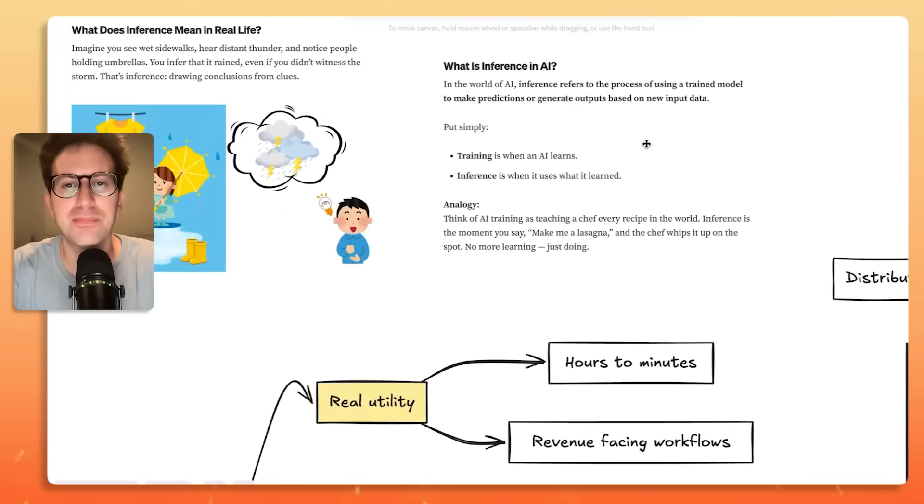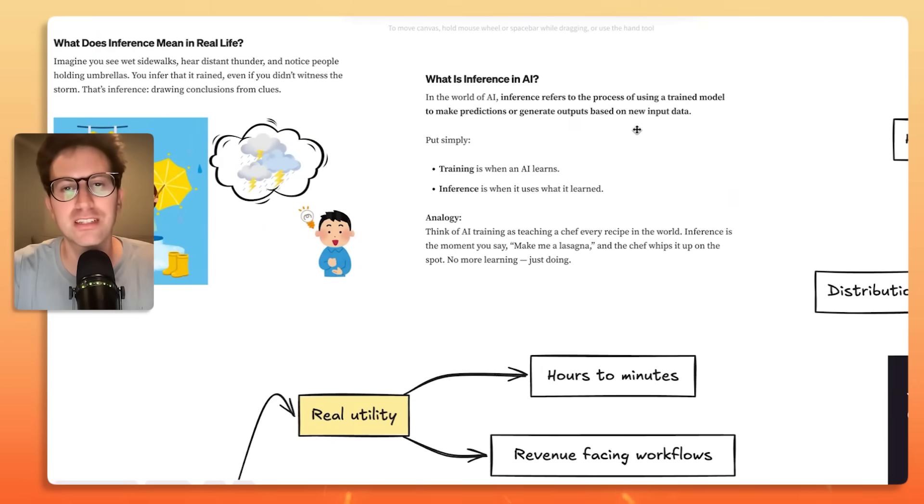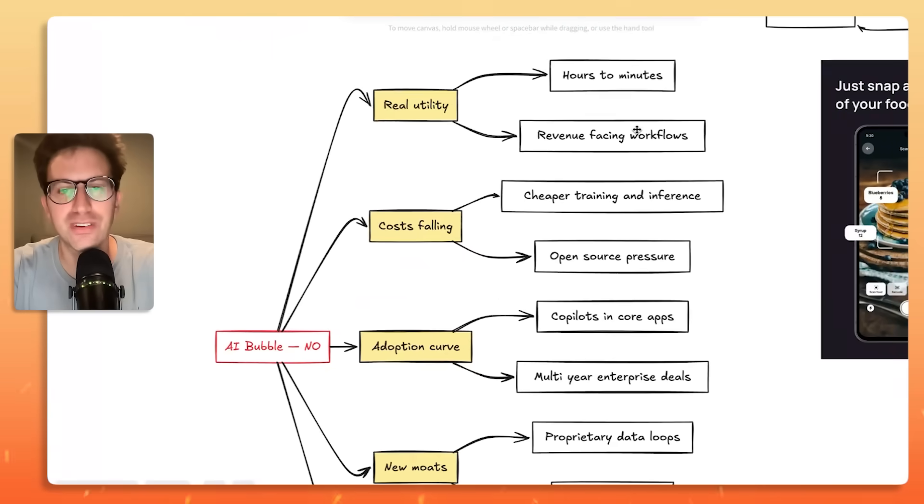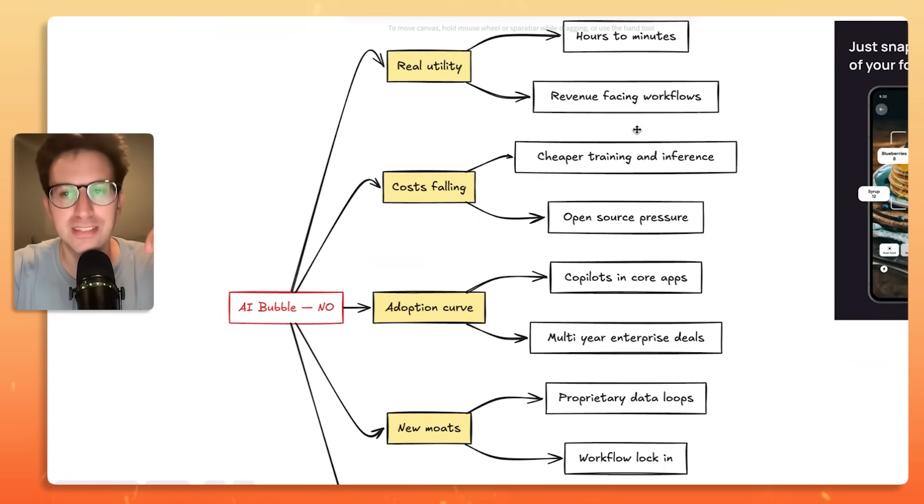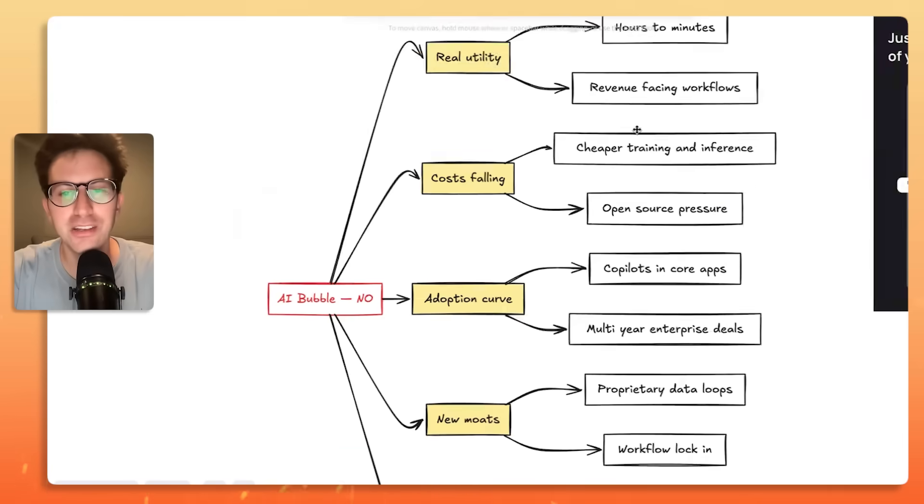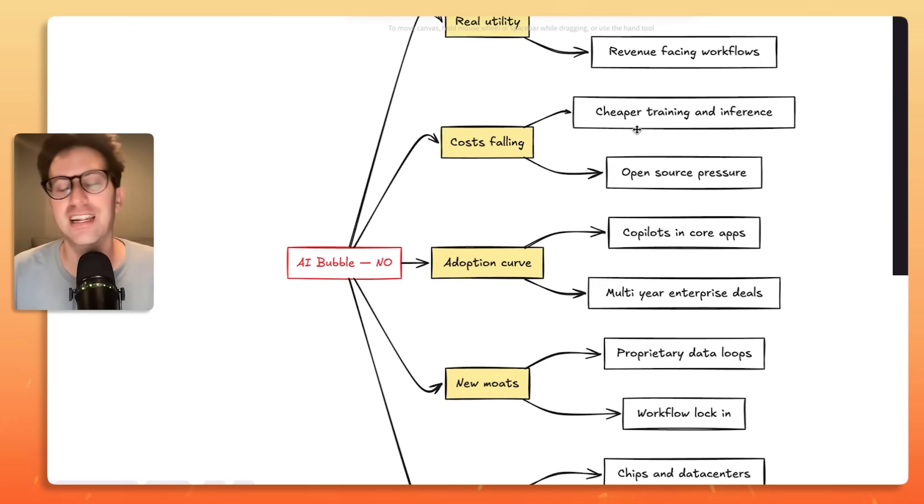So inference and AI refers to the process of using a trained model to make predictions or generate outputs based on new input data. So simply put, training is when AI learns. Inference is when it uses what it learned. So the analogy, how do you think about it? Think of AI training as teaching a chef every recipe in the world. Inference is the moment you say, make me lasagna, and the chef whips it up on the spot. No more learning, just doing. So the cost of inference, which is really the foundation of AI, is going down and down and down. So when we're talking about the shaky unit economics, maybe there is shaky unit economics. But if the costs are going down, maybe it can get profitable.